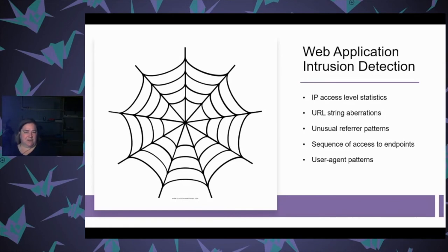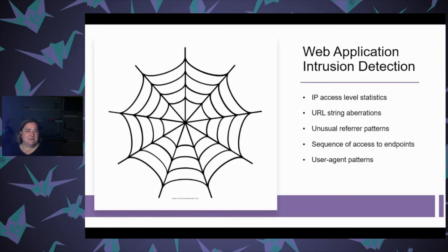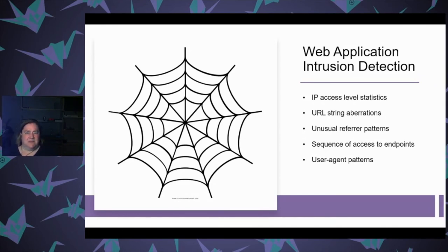Unusual referral patterns — if you're using an automated tool like curl, unless you explicitly set it, your referral patterns and user agent might look a little unusual. It's not that using curl is bad, but it does mean they're throwing something automated at your system. A sequence of access to endpoints would suggest they're basically crawling or possibly trying to look for something that's vulnerable.